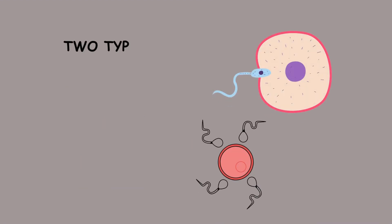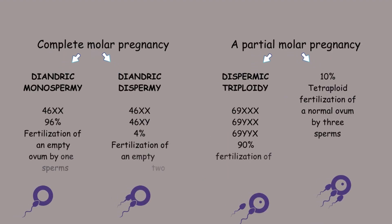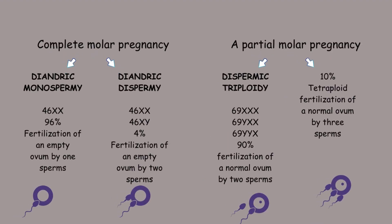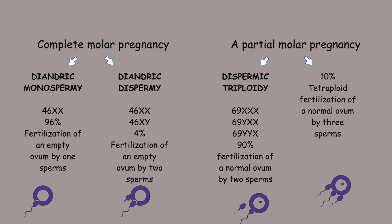There are two types – complete molar pregnancy and partial molar pregnancy. Complete molar pregnancy can be divided into diandric monospermy and diandric dyspermy. Diandric monospermy is the most common form, which describes the fertilisation of an empty ovum by a single sperm. Diandric dyspermy, occurring in 4% of cases, involves the fertilisation of an empty ovum by two sperm cells.